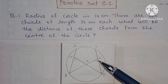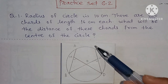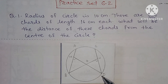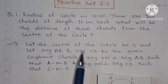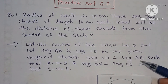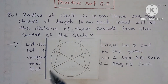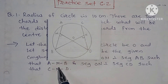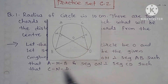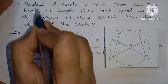We have to find out OM and ON. Two chords are given, radius OB and OD are 10 centimeters each. Let the center of the circle be O, and let segments AB and CD be the given congruent chords. Segment OM is perpendicular to segment AB such that M is between A and B, and segment ON is perpendicular to chord CD such that N is between C and D.